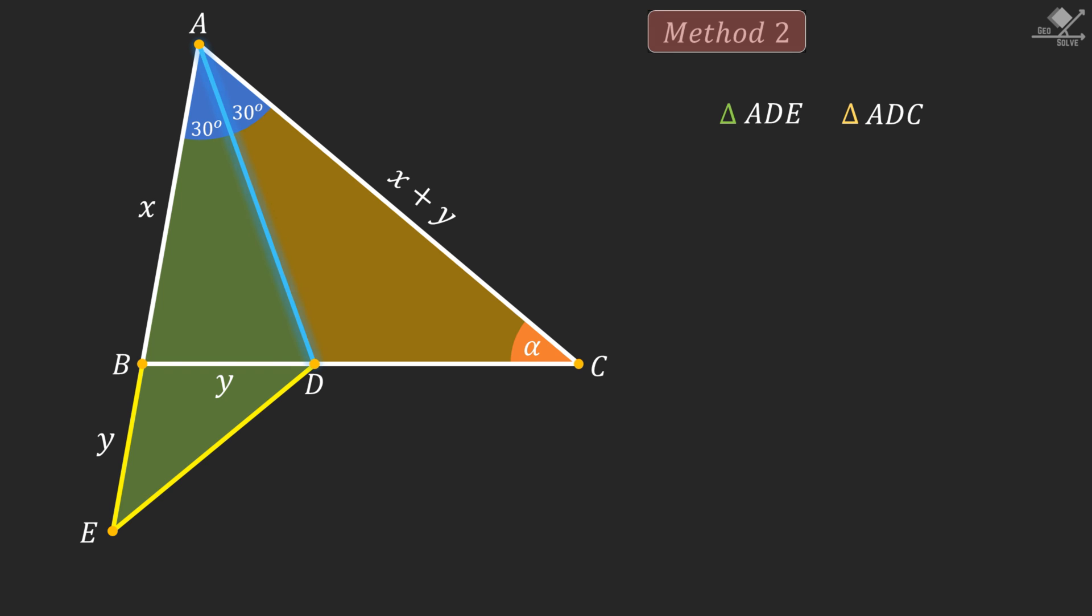They share a line segment AD as a common side. And these two sides are X plus Y units. And the angle between blue and yellow lines are equal. So we can conclude that these two triangles are congruent by side angle side rule. Therefore, the angles opposing equal sides should be congruent.